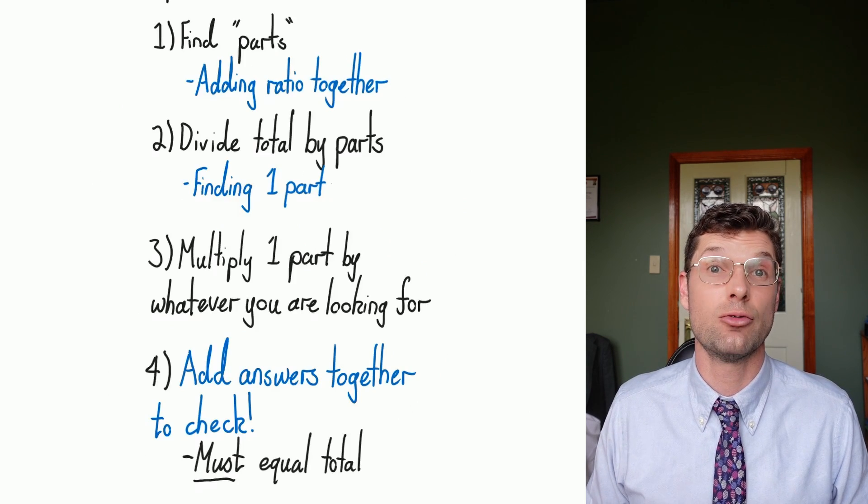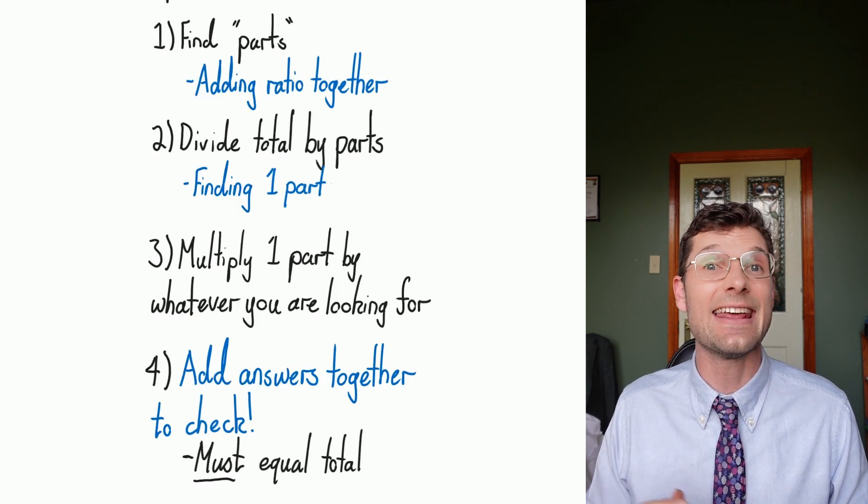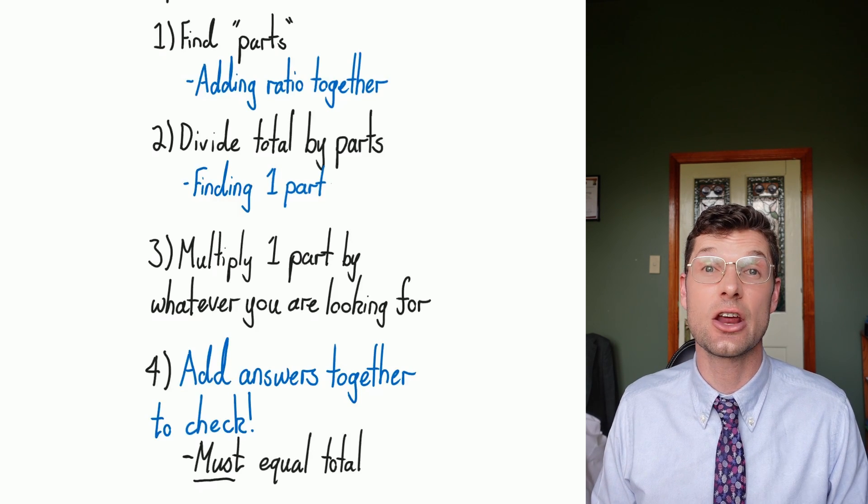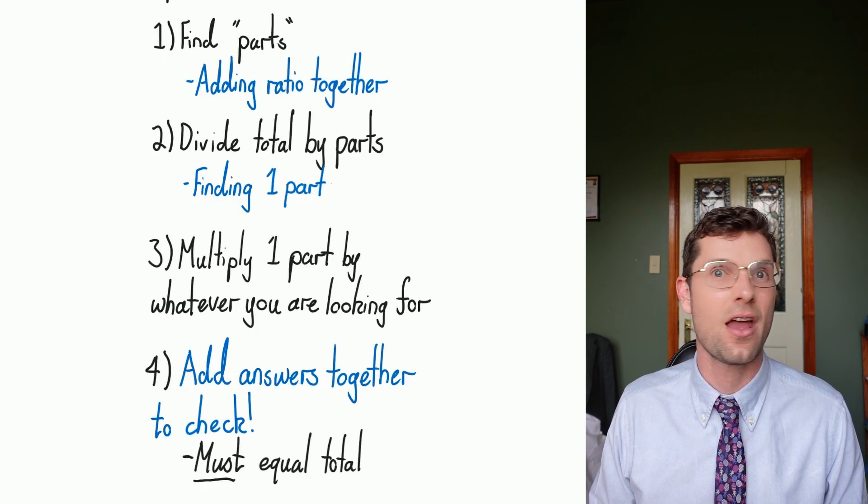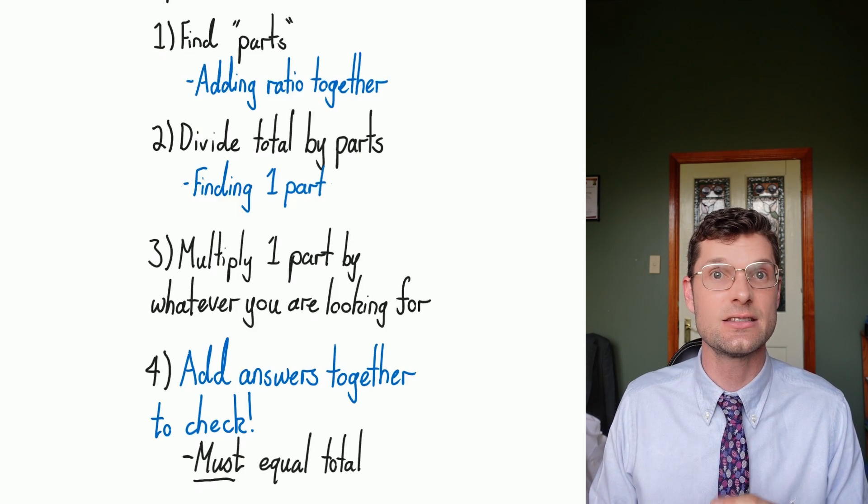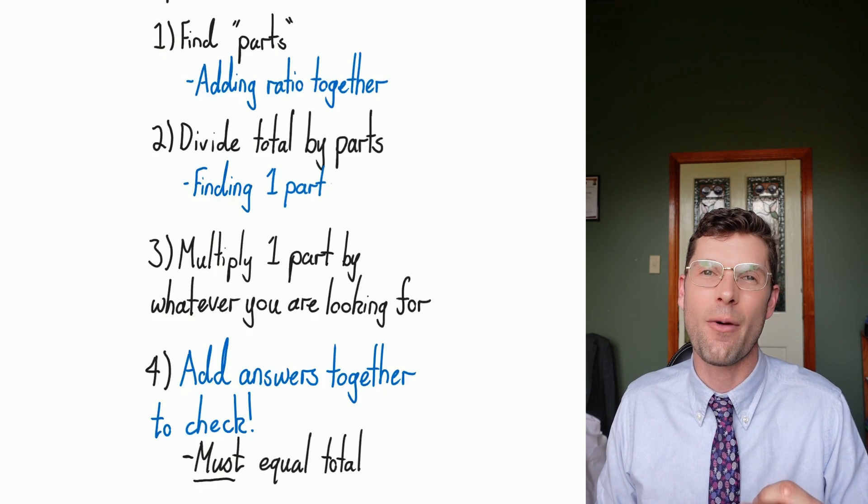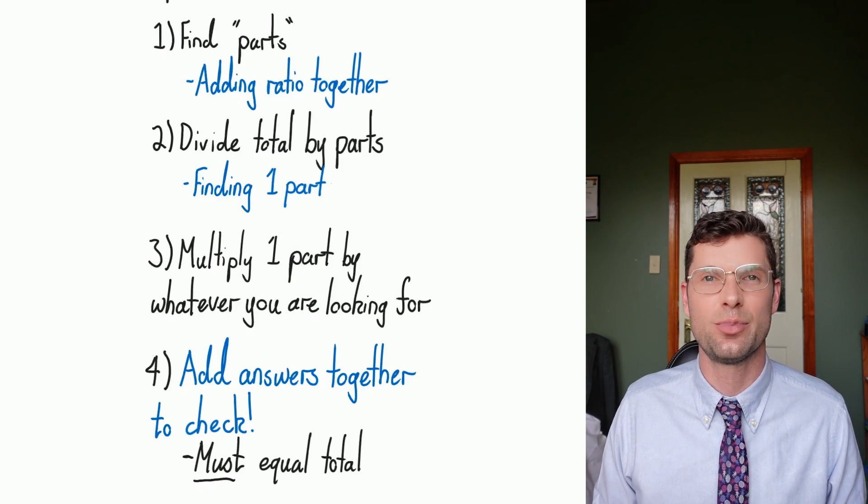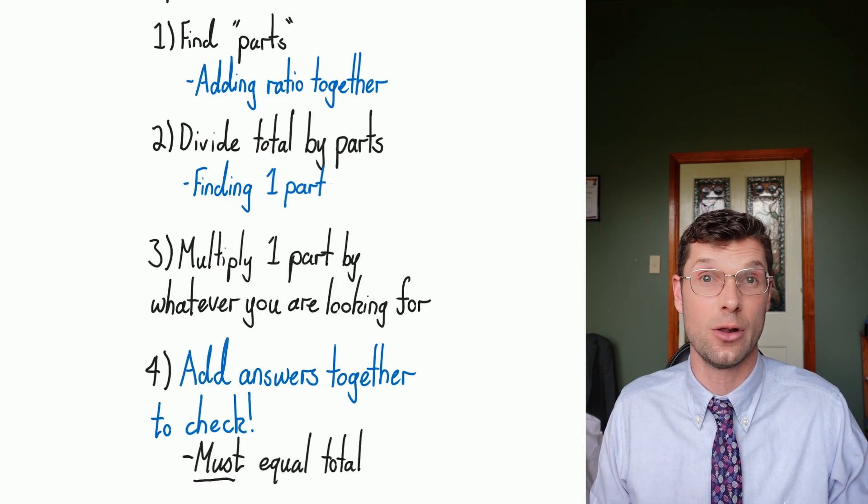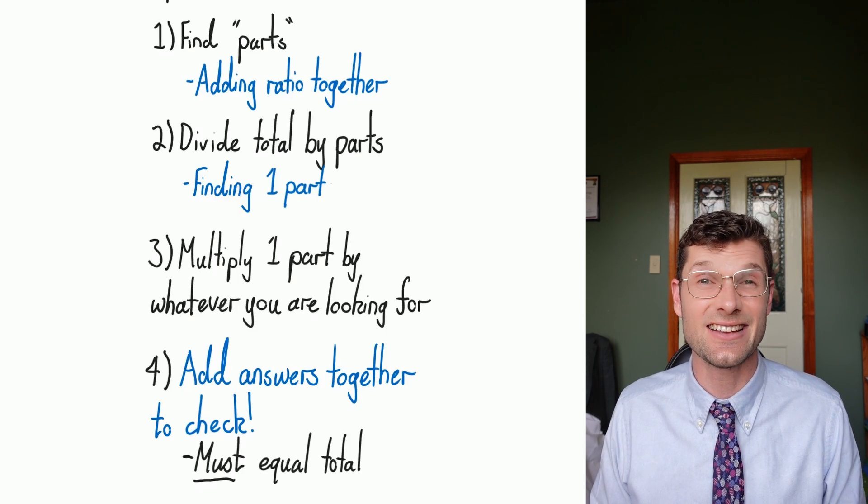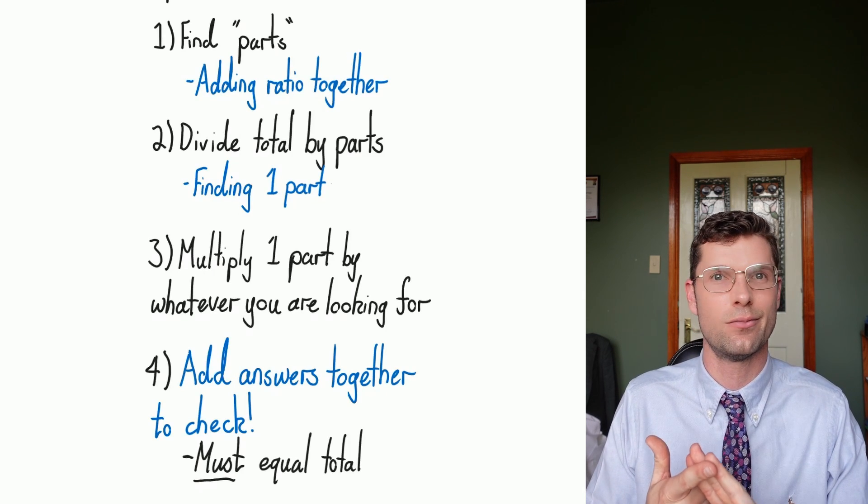So the steps for getting these correct is: firstly, we've got to find out all the parts in the question, and this just means adding everything of the ratio together. This is gonna be what we divide the total amount by, and that's our second step. From there, we just have to multiply what one part is to how much you actually deserve or what the question is asking for. My final big pro tip is please, please, please, check your answer at the end. All the parts should equal up to the total amount at the very start. And if it doesn't, you've made a mistake somewhere. So these four steps—find the parts, divide, multiply, and check—are everything that you need in order to get these questions right.